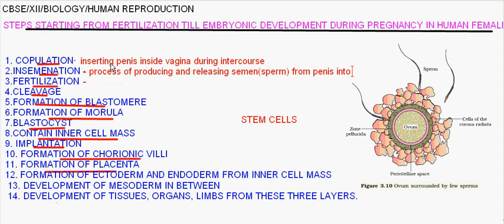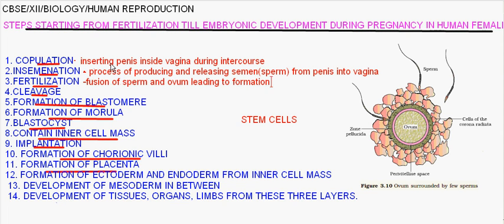Fertilization is the process of fusion of male and female gametes — that is, sperm and ovum — leading to formation of a zygote. Both sperm and ovum are haploid cells. When they fuse, they form a diploid zygote.